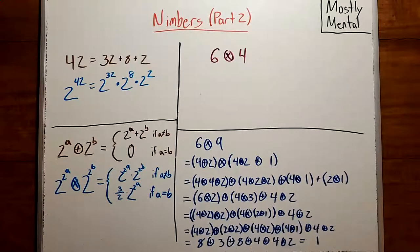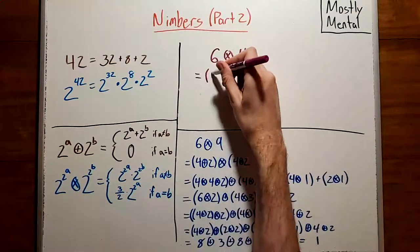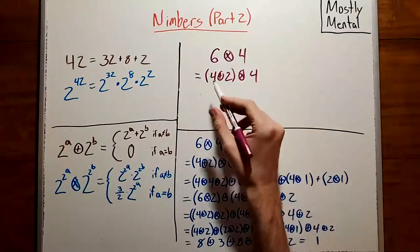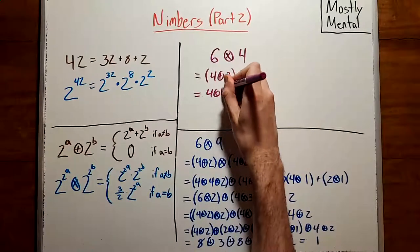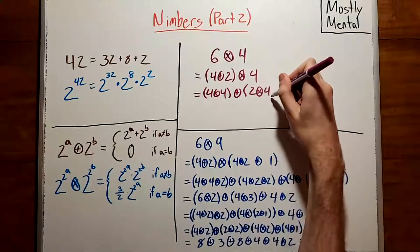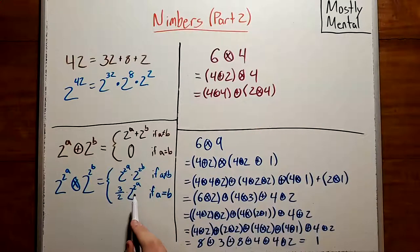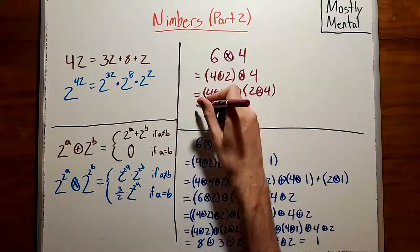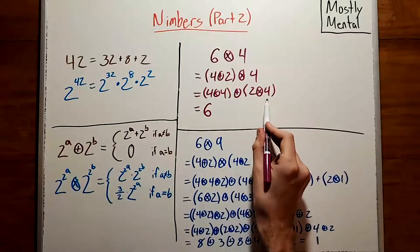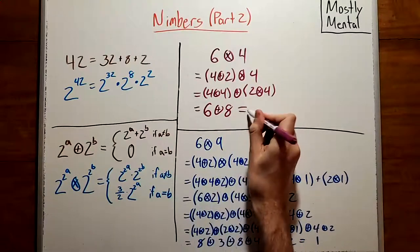Let's put that together with an example. Let's say we want to multiply 6 by 4. First, we expand the binary to get 4 plus 2 times 4. And then we distribute to get 4 times 4 plus 2 times 4. And 4 and 2 are Fermat 2 powers, so we can use this rule here. 4 and 4 are the same, so this is 3 halves times 4, which is 6. And 2 and 4 are different, so we multiply them to get 8. And then adding, we get our total of 14.